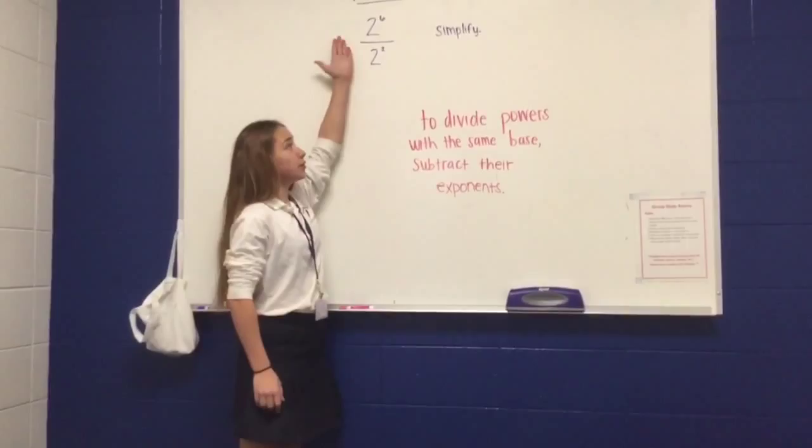First, you take their exponents, which is six and two. You subtract them and you get four.